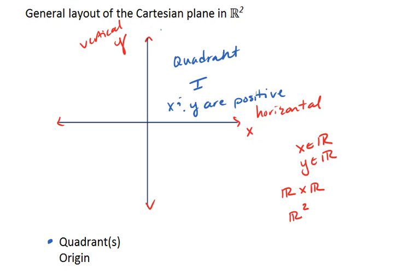We then proceed counterclockwise. We have quadrant two over here, and x is negative, y is positive in quadrant two.